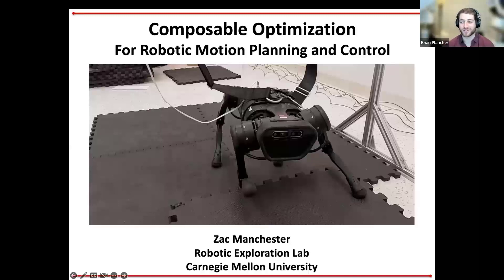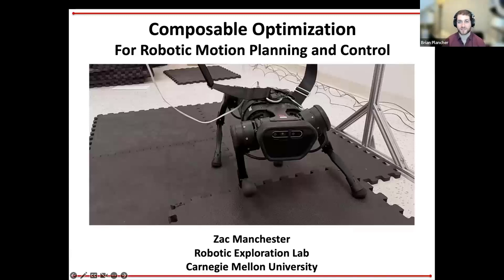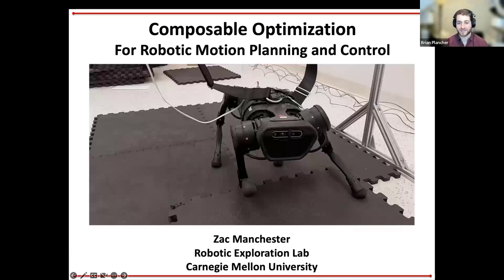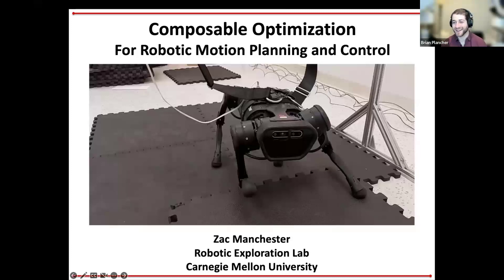Today for our first seminar, we have Zach Manchester from CMU. Zach is an assistant professor of robotics at CMU. He holds a PhD in aerospace engineering and a BS in applied physics from Cornell. Zach was a postdoc in the Agile Robotics Lab at Harvard and previously worked at Stanford, NASA Ames Research Center, and Analytical Graphics. He received an NSF Early Career Faculty Award in 2018 and has led three satellite missions. His research interests include motion planning, control, and numerical optimization. I'm very excited to have him here talking about composable optimization for robotic motion planning and control.